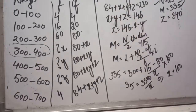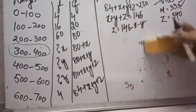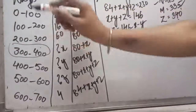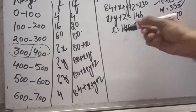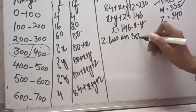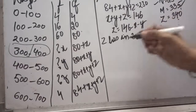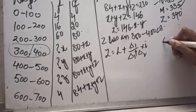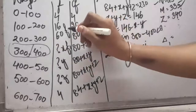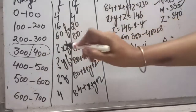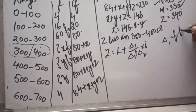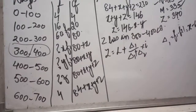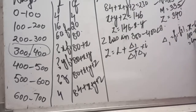Our third given information is mode equals 340. Mode also lies in the 300 to 400 class interval. Applying the mode formula: lower limit plus delta1 divided by (delta1 plus delta2), multiplied by i. Here f1 is x, f0 is 60, and f2 is y. Delta1 equals f1 minus f0 equals x minus 60. Since x equals 100, delta1 equals 100 minus 60, which is 40.